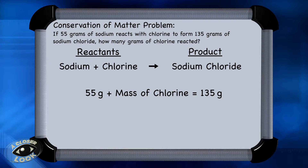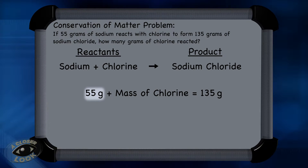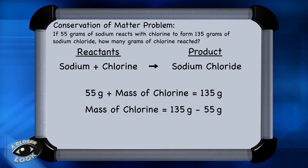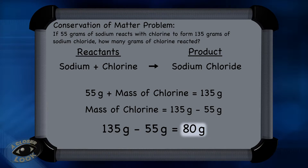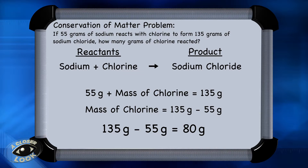Since the law of conservation of matter states that the total mass of the products must be the same as the mass of the reactants, the mass of sodium and chlorine has to equal 135. So 55 plus the mass of chlorine will equal 135. Rearrange that by subtracting 55 from 135, and you find that the mass of chlorine is 80 grams in this reaction. The total mass of the reactants is equal to the total mass of the products.